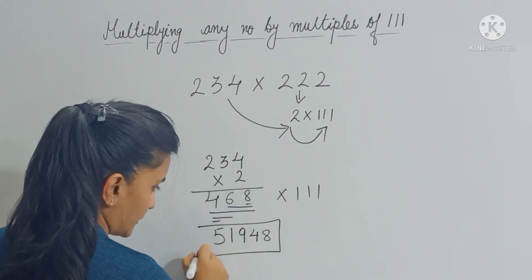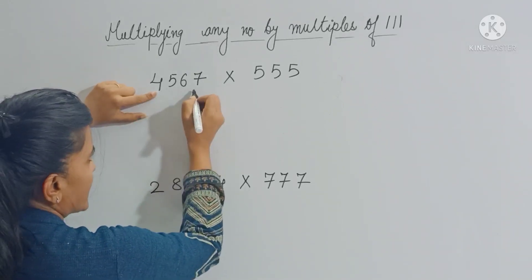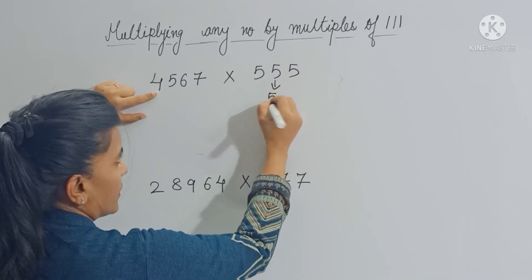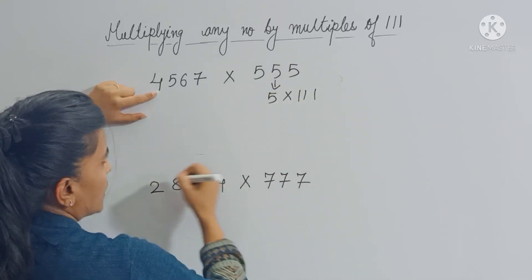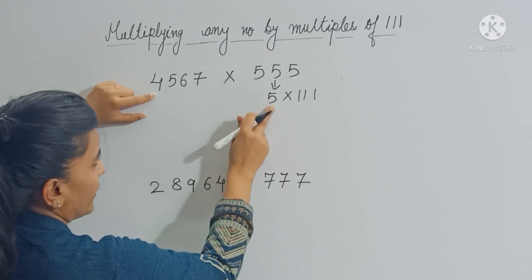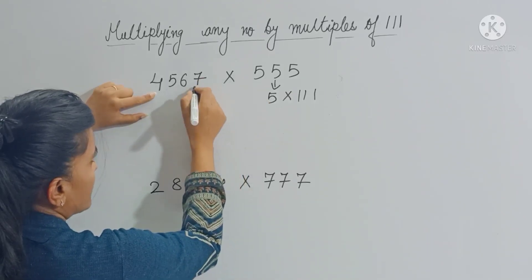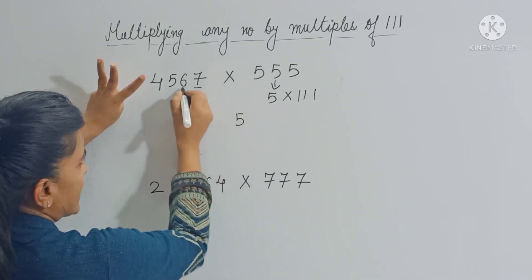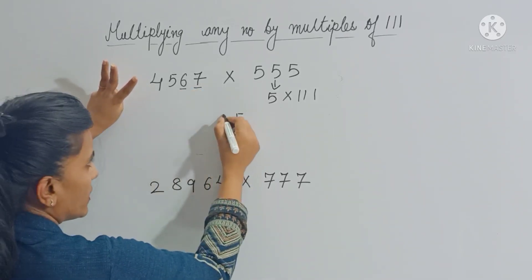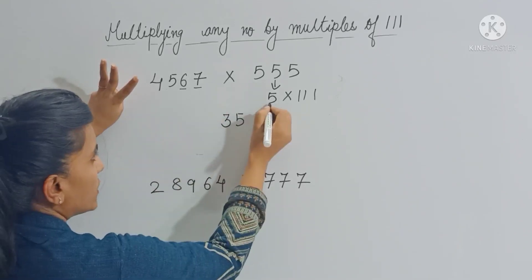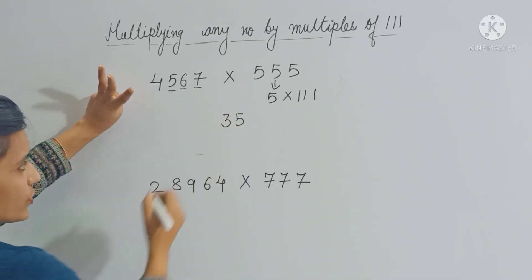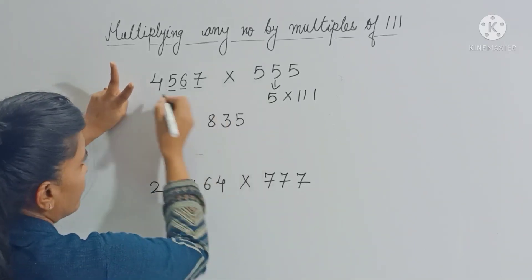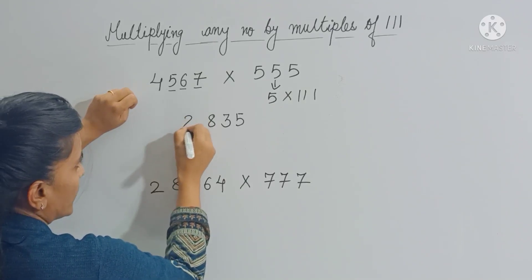Now let's multiply 4567 by 555. We break it down as 5 × 111. First, multiply 4567 by 5: 5 × 7 = 35, carry 3; 5 × 6 = 30 + 3 = 33, carry 3; 5 × 5 = 25 + 3 = 28, carry 2; 5 × 4 = 20 + 2 = 22. So 4567 × 5 = 22835.